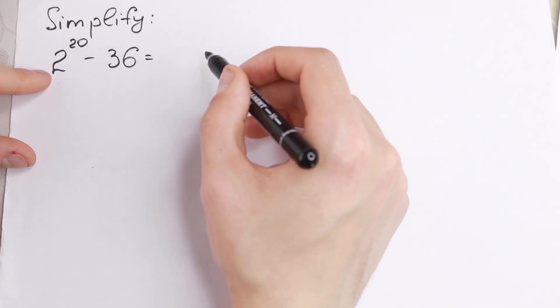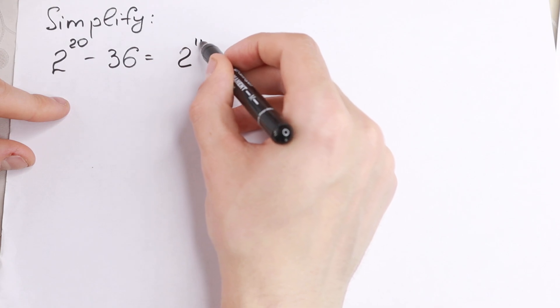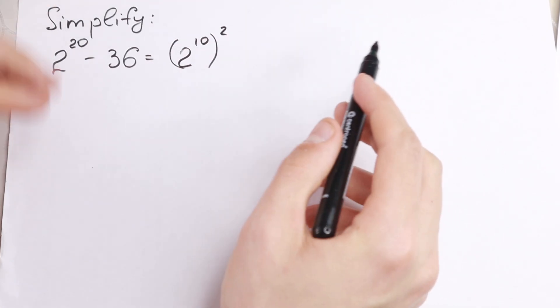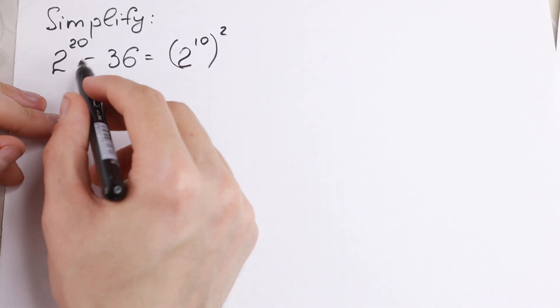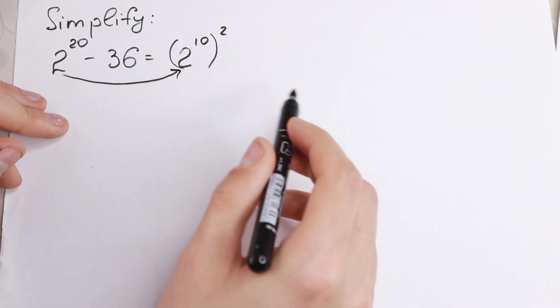This 2 to the 20 power we can write as 2 to the 10th power and 2 to the 2nd power. If we raise it, we multiply these bases and we will have the same. So we can just write this as 2 to the 10th power square.